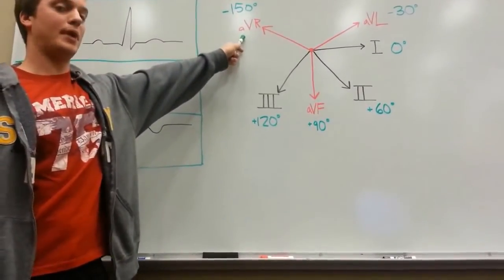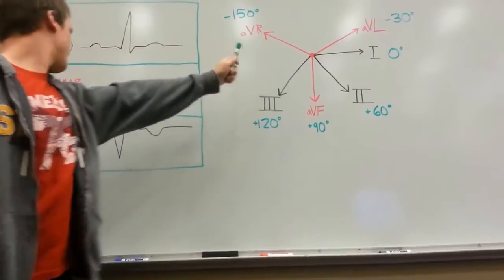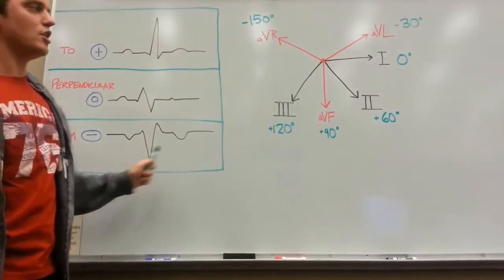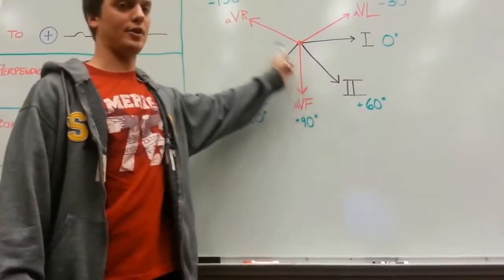So, for example, if your AV right unipolar node had a negative deflection, you know that your axis would be traveling in the opposite direction.